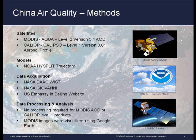Data was also obtained from Giovanni, a web-based application for visualizing and analyzing remote sensing data, as well as from the website of the U.S. Embassy located in Beijing. No additional processing was required for any of the pre-processed MODIS and CALIPSO data sets. Google Earth was used simply as a visualization tool for illustrating MODIS data in a meaningful and easily understood manner.